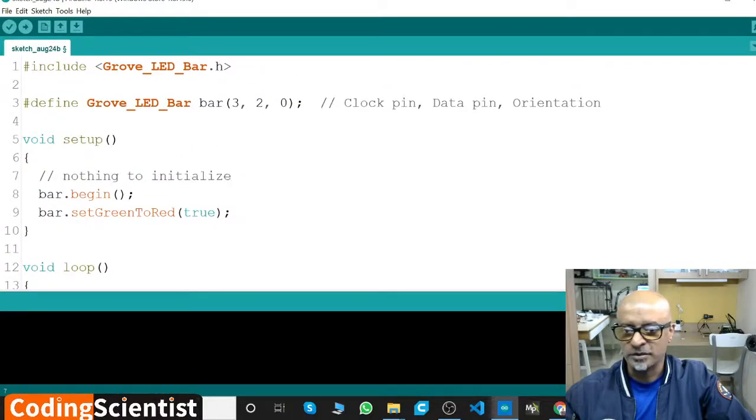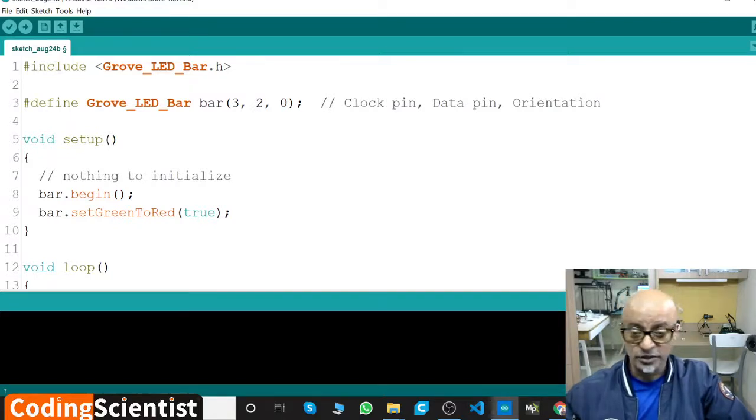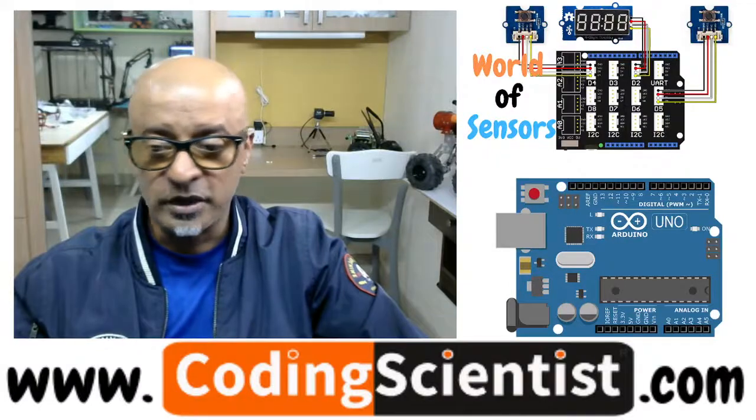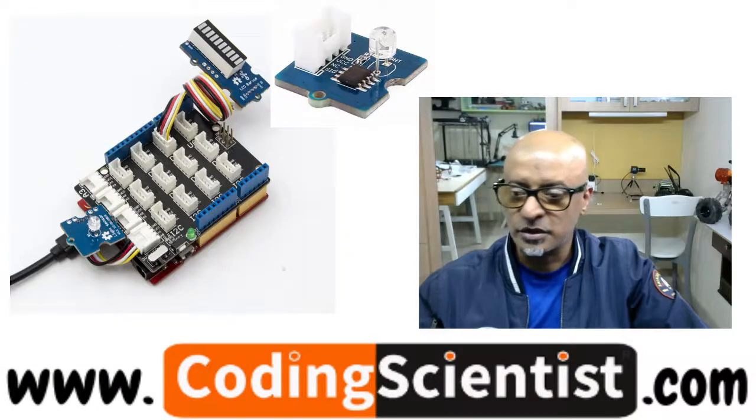Once you upload this code, it's just about 20 lines of code. It's pretty easy to understand. I don't see any reason why I should be explaining, but in case you need any explanation, I'll be happy to assist you. Let's go ahead. I have already loaded it. Now let me show the circuit.